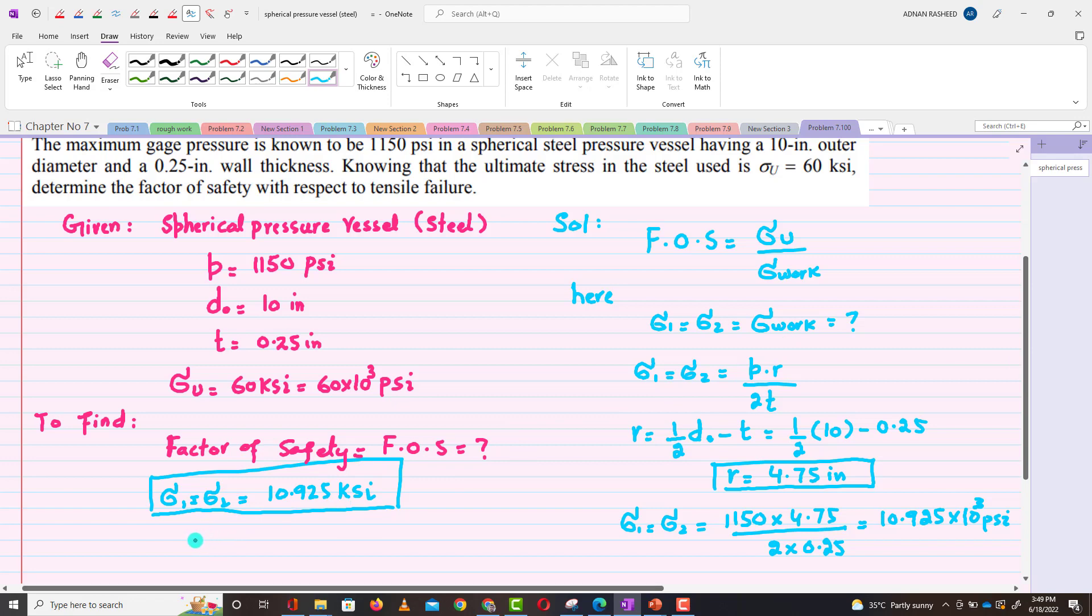Clear. So you can put it in the formula. Factor of safety is equal to σ ultimate divided by σ working.